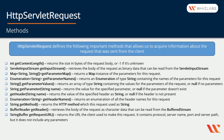We can use getHeader, which takes a string argument and returns the value of the specified header as a string, or null if the header is not present. We can use getHeaderNames, which returns an enumeration of all the header names for this request. getMethod returns a string representing the HTTP method used for this request. getReader retrieves the body of the request as character data readable from the BufferedReader instance returned. getRequestURL returns the URL the client used to make the request — it contains the protocol, server name, port, and server path, but does not include any parameters. The returned type is StringBuffer.